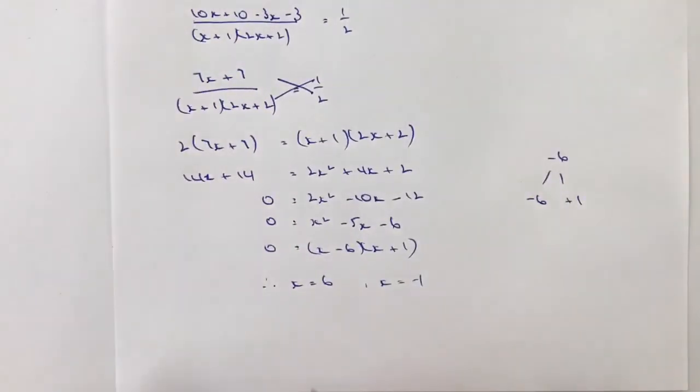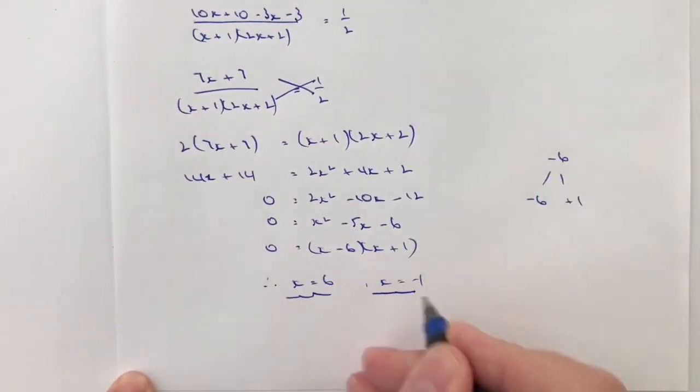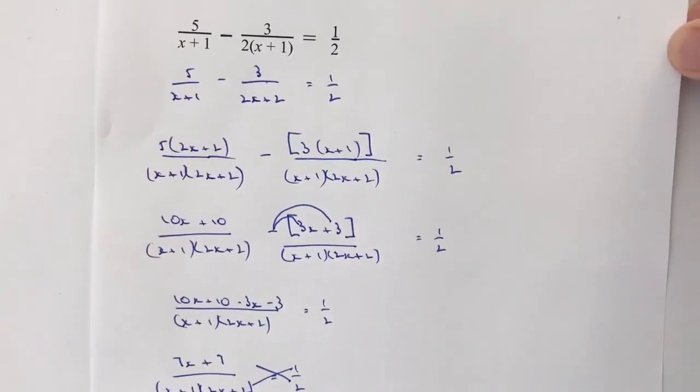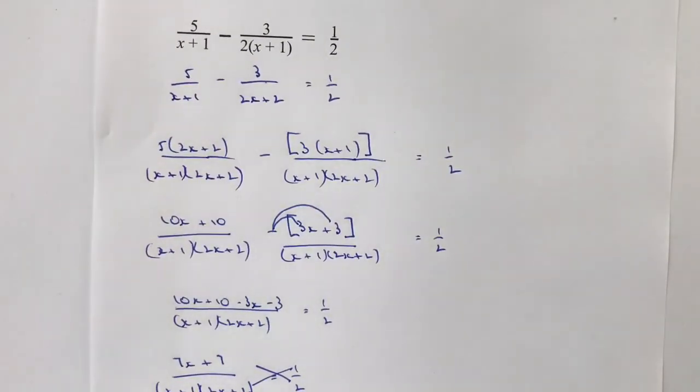So the two values I've got for x would either be plus 6 or minus 1 in this particular equation. I hope that's been OK for you. I hope you found it useful. Please do comment below if you're not sure about anything. I'll always come back to you and I'll look forward to seeing you inside the next video.